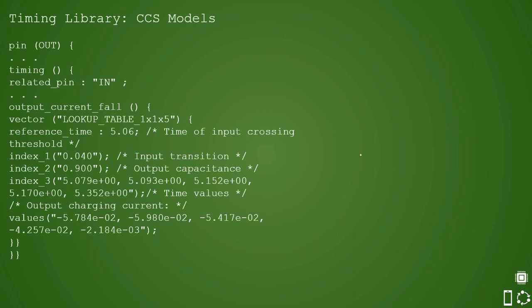Now let us move on to CCS model or composite current source model which has an advantage that it can provide more accuracy at lower submicron technologies which NLDM cannot do. At lower tech nodes the miller capacitance becomes considerable and hence cannot be ignored. Here is a sample of how a pin in library with CCS model is implemented looks like.